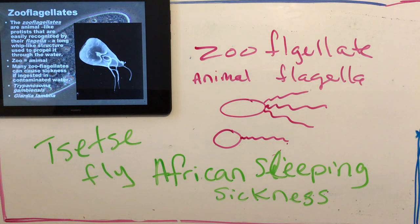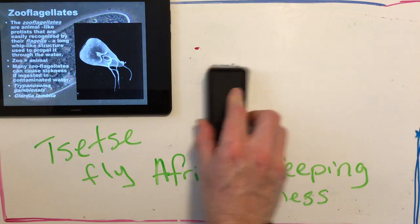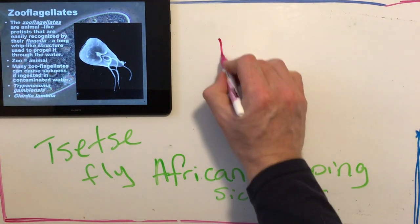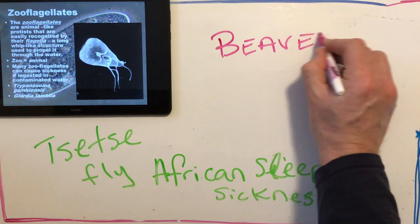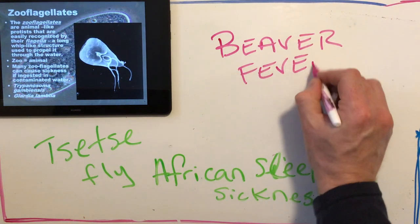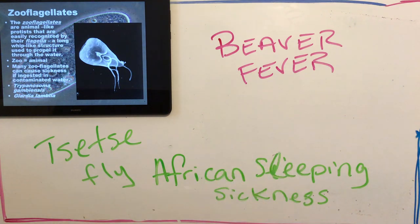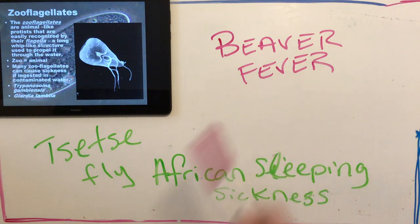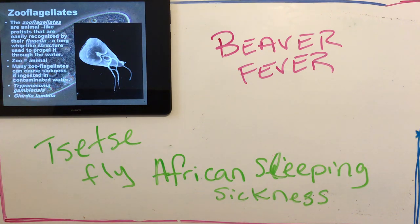A more common one in Canada is Giardia lamblia, which causes something called beaver fever because it is spread through the fecal matter of a beaver. When you get beaver fever, you run a fever, you have diarrhea or you're throwing up — it just messes up your digestive system, the intestines and stomach. So you go up to the cabin for the weekend, get a mouthful of lake water, and these things get inside you and can make your weekend not so pleasurable.